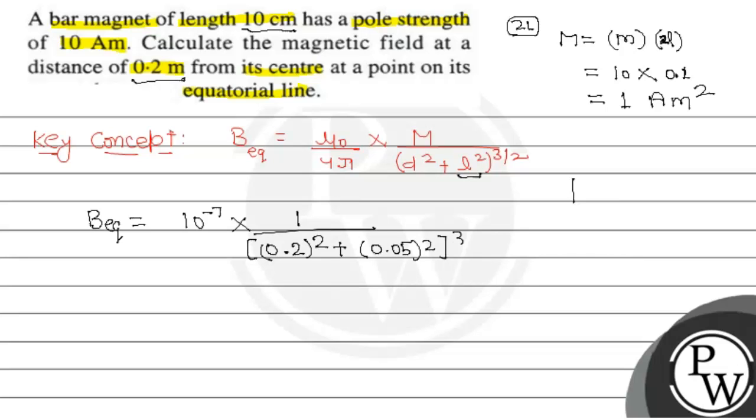I will simplify it, so B equatorial equals 10 to the power minus 7 upon 0.04 plus 0.025. When I sum it, 0.065 to the power 3 by 2. And when I simplify it,